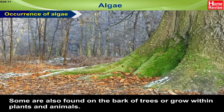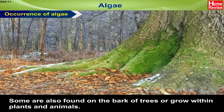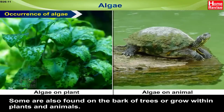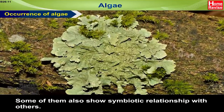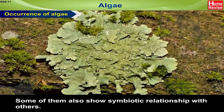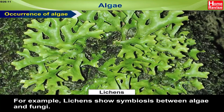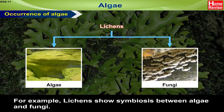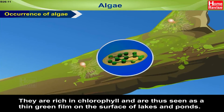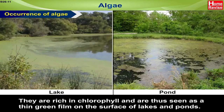Some are also found on the bark of trees or grow within plants and animals. Some of them also show symbiotic relationships with others. For example, lichens show symbiosis between algae and fungi. They are rich in chlorophyll and are thus seen as a thin green film on the surface of lakes and ponds.